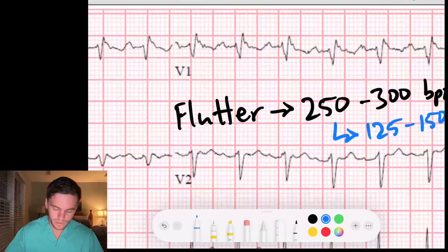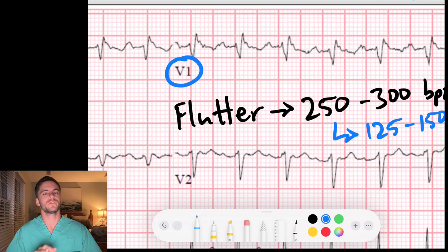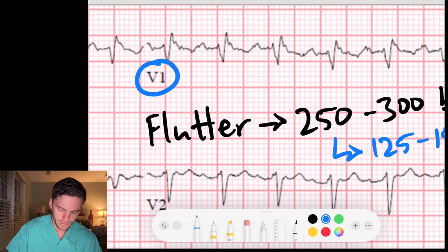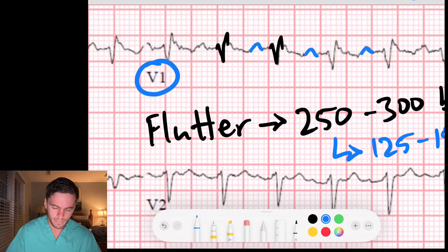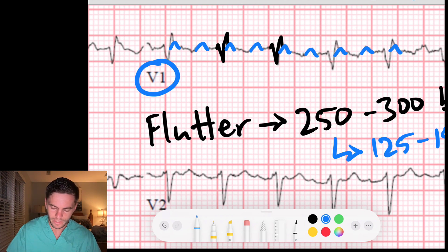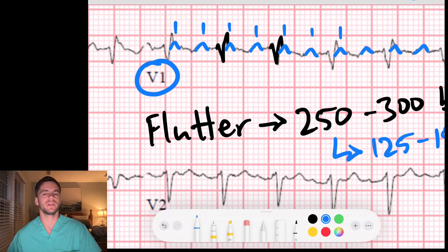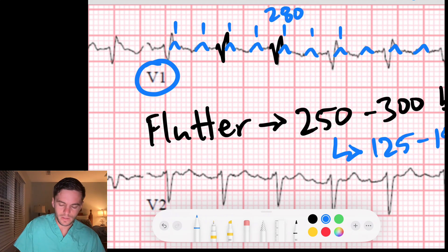V1 is a great lead to look for flutter waves because it usually has a nice flat baseline with sharp flutter waves. I notice a wave here — let me draw my QRSs. We may have an incomplete right bundle branch block, but regardless, notice this hump here — that's atrial activity. I see this little hump peeking out of my QRS complex, and that creates a marching-through pattern in V1: flutter wave, flutter wave, flutter wave. There are two flutter waves for every one QRS, occurring at roughly 280 beats per minute.